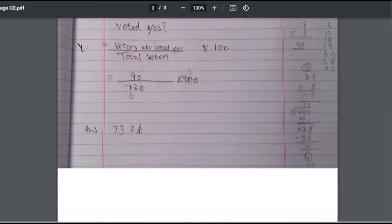Percentage of voters who said yes. Very good. I am just writing yes percentage. So voters voted yes upon total voters. 90 upon 120 into 100. So 0 and 0 got cancelled.